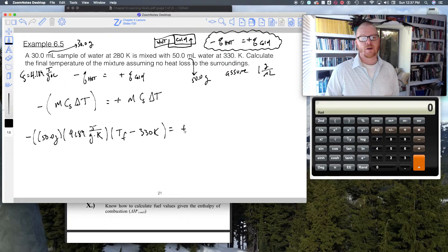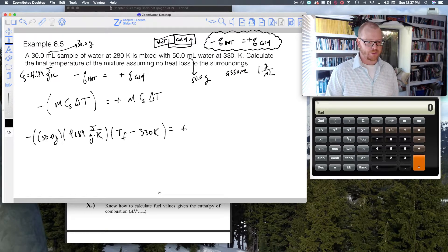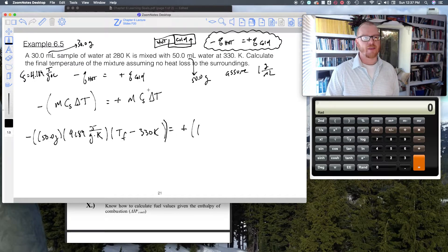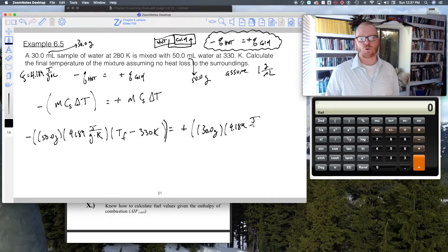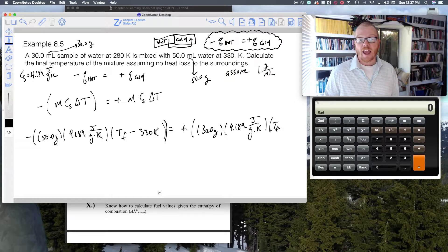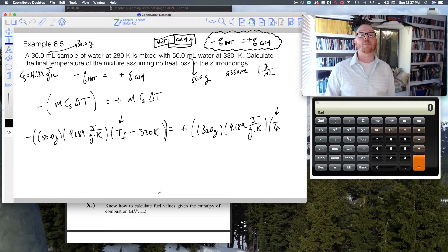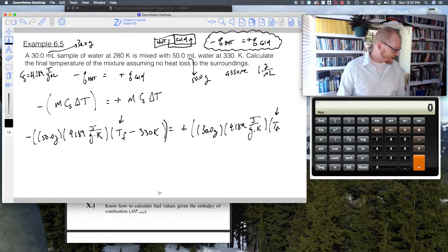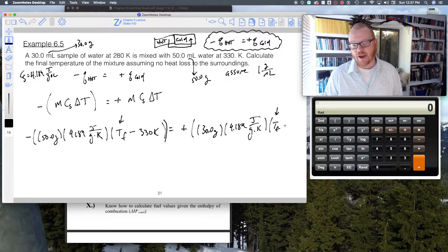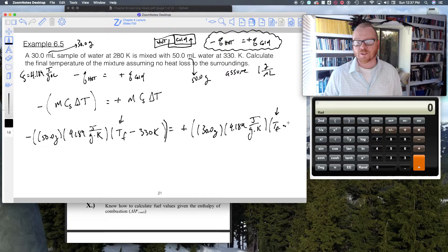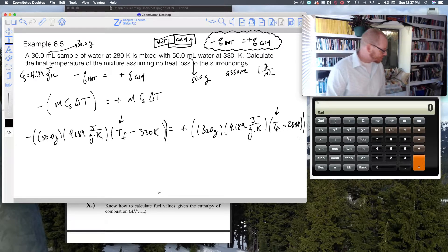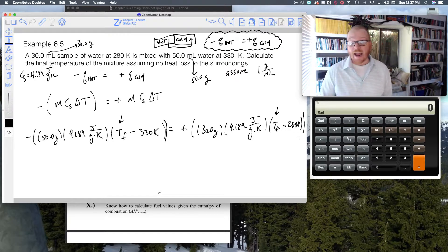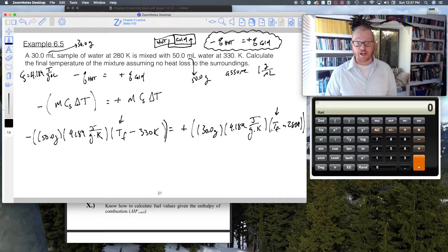Now what am I solving for? Calculate the final temperature. So in this delta T, that's gonna be Tf minus the initial temperature. For the 50 grams of water, that initial temperature was 330 Kelvin. Because that's Kelvin, I can write this unit as joule per gram per Kelvin, same thing as joule per gram per degree C.